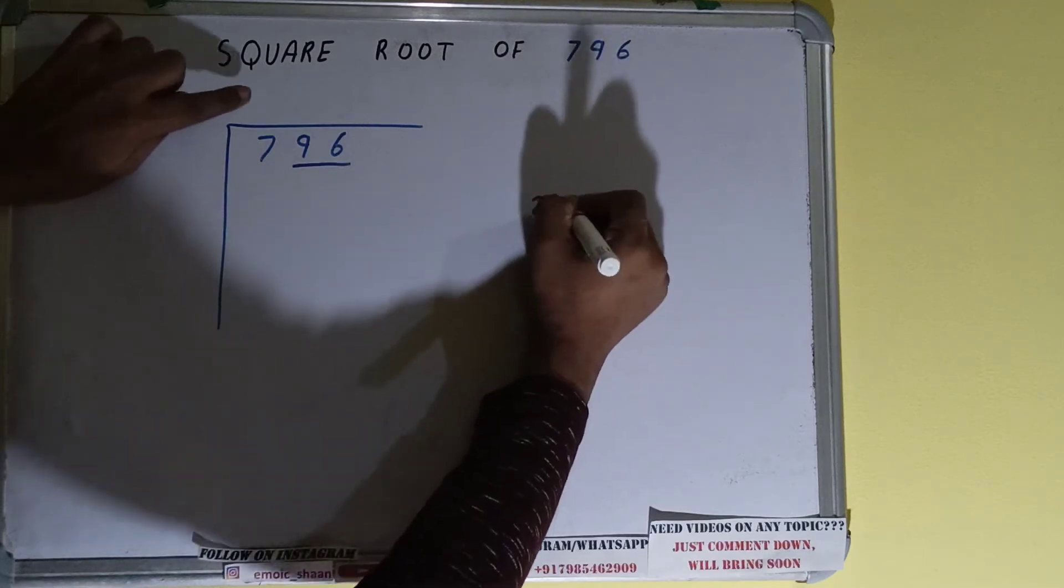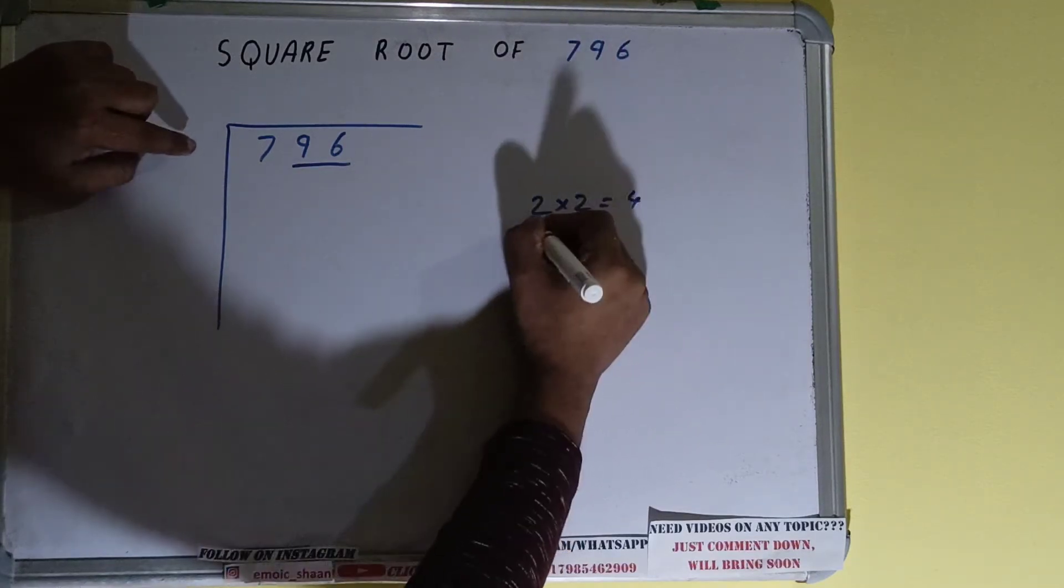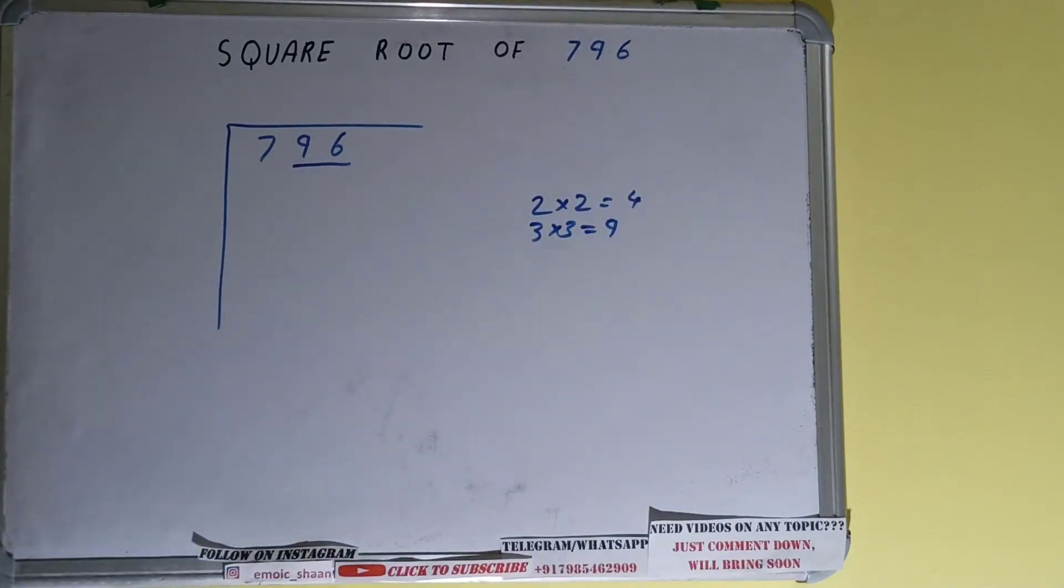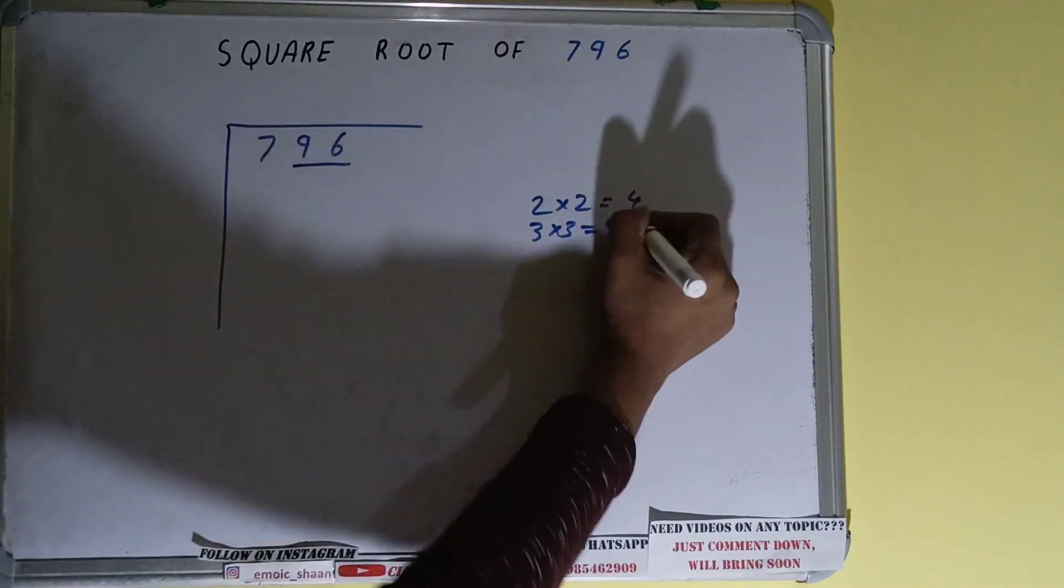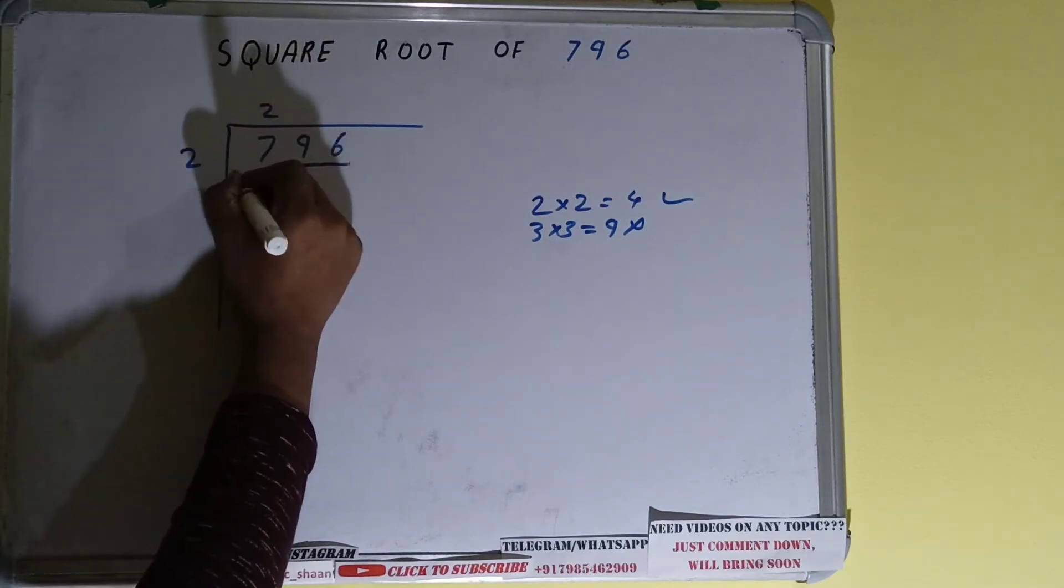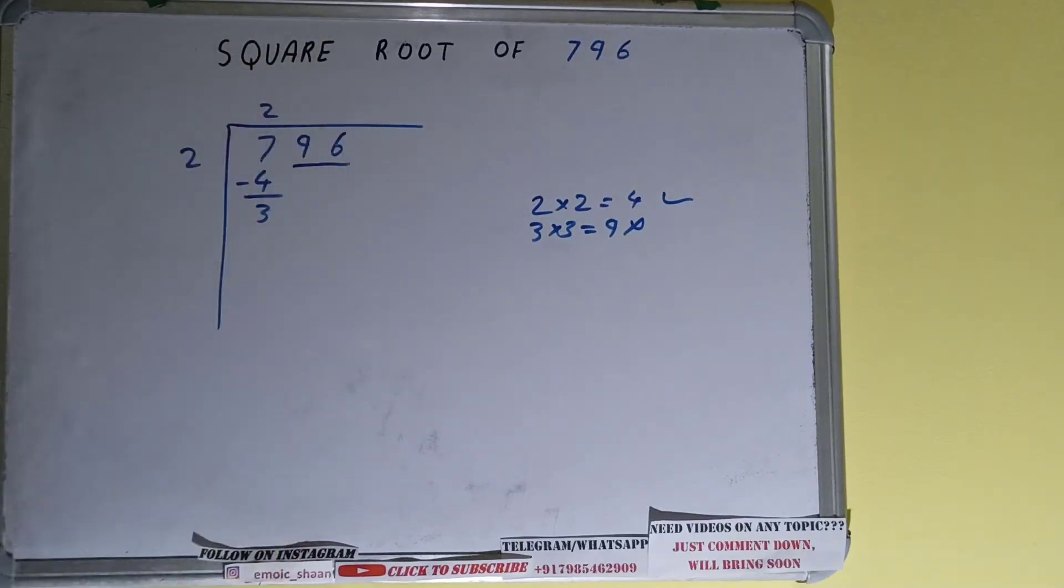So if we write 2 here and 2 here, it will be 4. If we write 3 here and 3 here, it will be 9. We cannot use 9 because it is greater than 7, so we have to use 4. So 2 here and 2 here will be 4. Subtract it and 3 will be left.